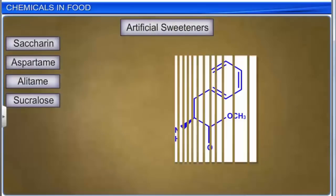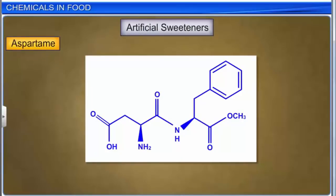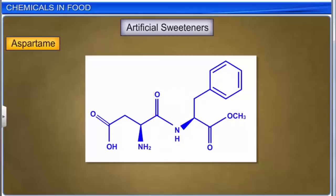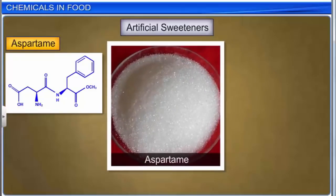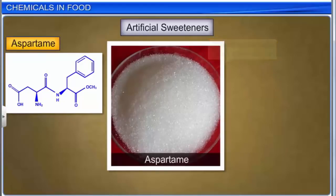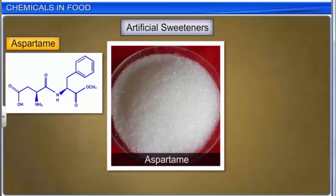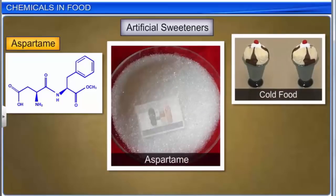Another popular and widely used artificial sweetener is aspartame. Aspartame is a methyl ester of the dipeptide formed from the amino acids aspartic acid and phenylalanine. It is a non-nutritive sweetener that is about 200 times sweeter than cane sugar. It has a sweet taste without the bitter or metallic aftertaste reported in other artificial sweeteners. However, its use is limited to cold food and soft drinks, as it is unstable at cooking temperature.